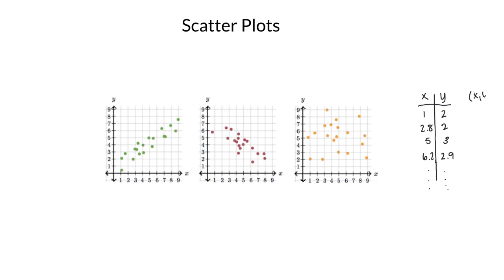Or even as ordered pairs. So we would have 1, 2 in parentheses, or 2.8 comma 2 and 5 comma 3, etc.